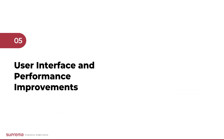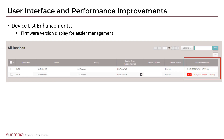Let's take a quick look at the UI changes and performance improvements made in Biostar 2 version 2.9.8. In the device list, in addition to the firmware version information, you can now check detailed information. This allows you to know in more detail whether it is a regular version, a beta version, or a customized version.